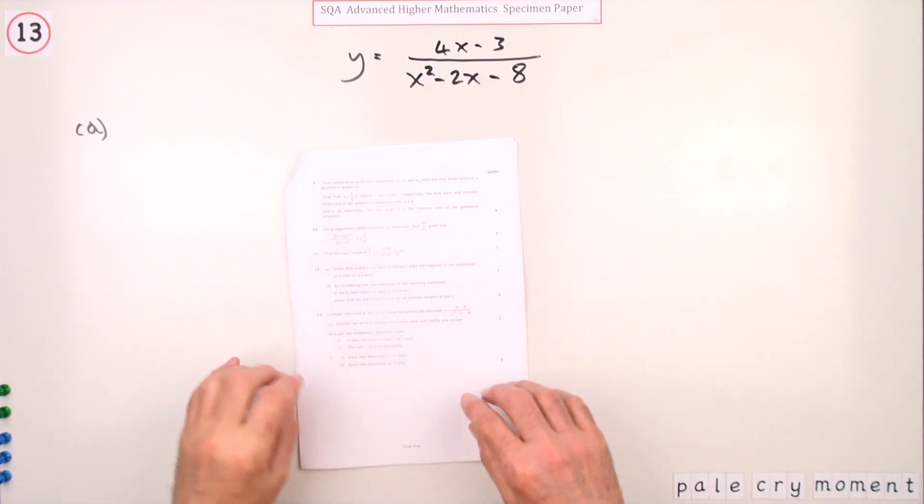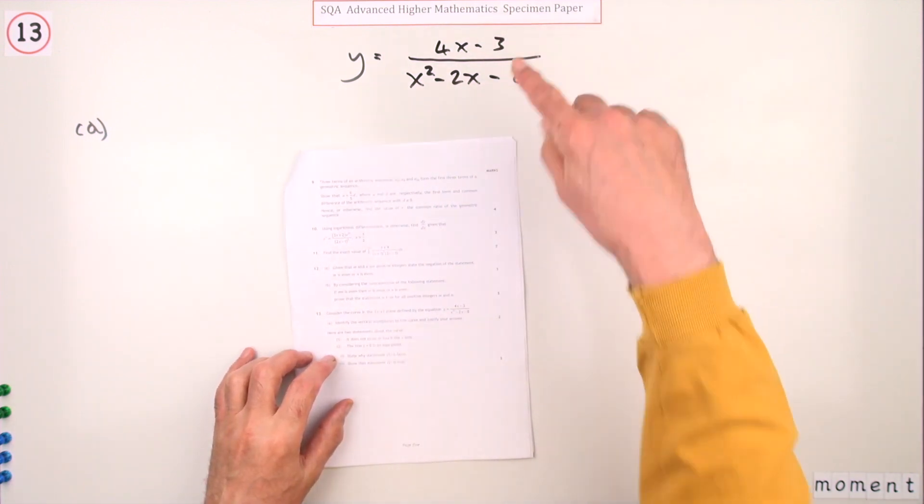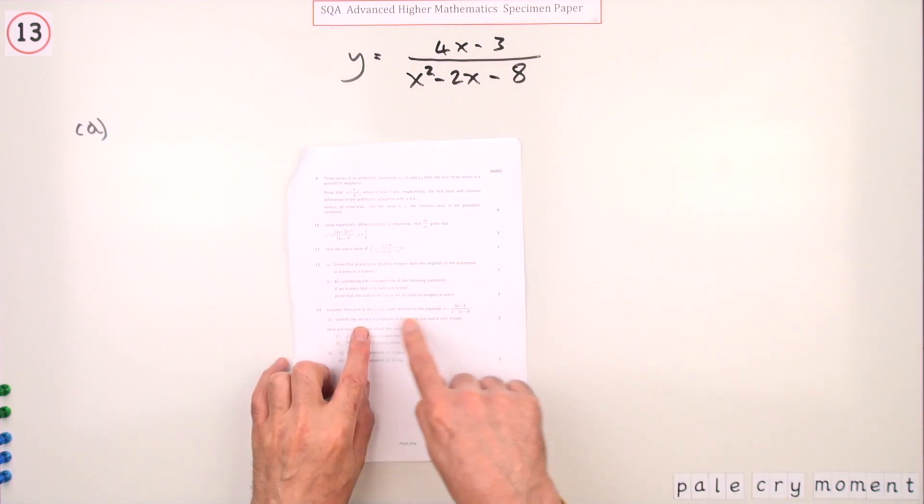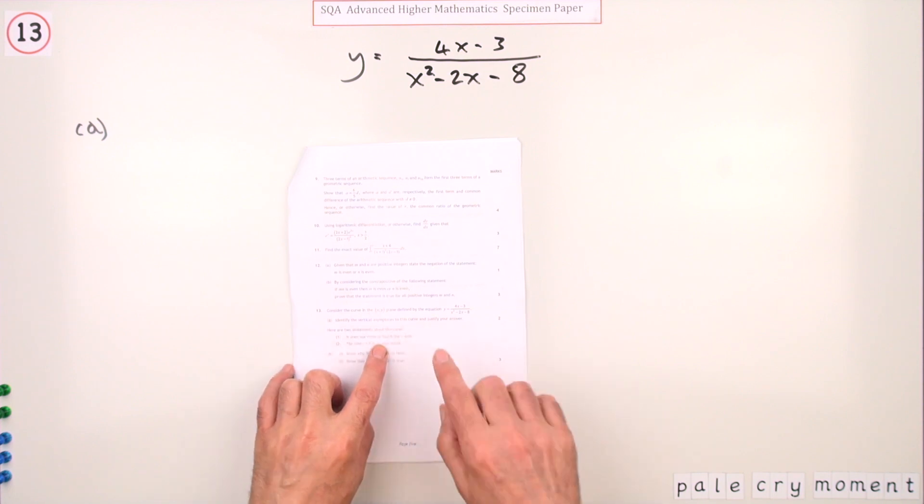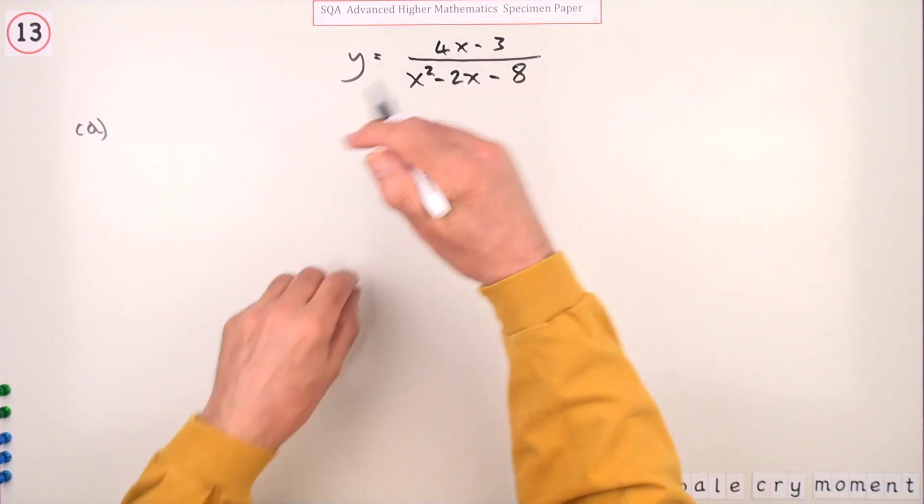Number 13 from the specimen paper. Here we go: graphs of a rational function. You've got this fraction here, just five marks. First two marks, identify the vertical asymptotes but also justify your answer. Well, you'll get the vertical asymptotes when the denominator equals zero.